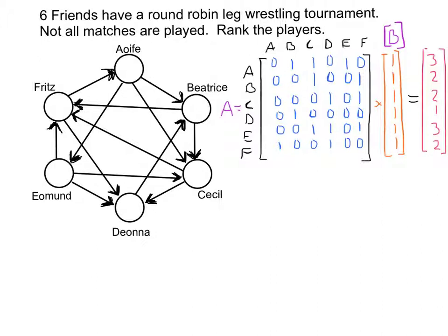We already have this A matrix. Now I'm going to use my calculator to generate A squared — that will show me who beat somebody who beat that person, as explained in the previous video. Your direct wins are still important, so I'm going to do A plus A squared, not just A squared by itself. Then I'm going to add up those rows, so this will count your direct wins plus your indirect wins — you beat somebody who beat that person.